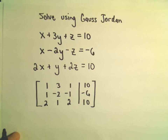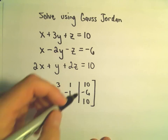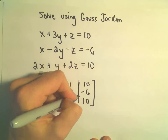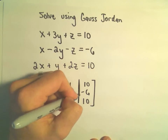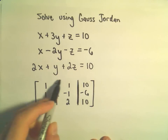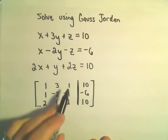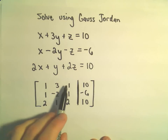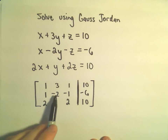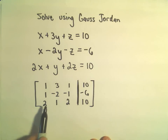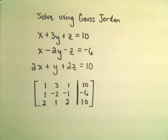Our goal is to make the left side of this matrix look like the identity matrix — 1, 0, 0, 0, 1, 0, 0, 0, 1. So we're going to have to do a few things to do that.